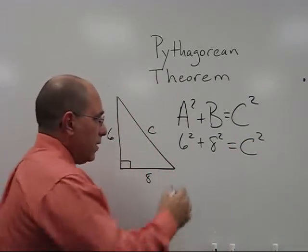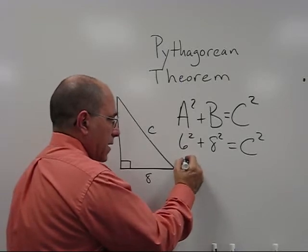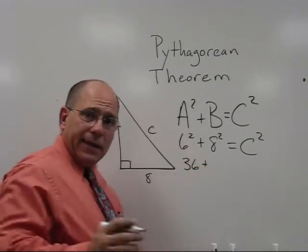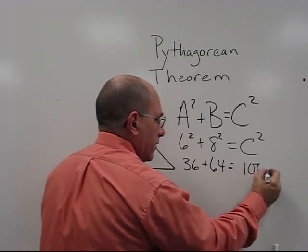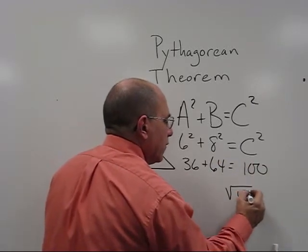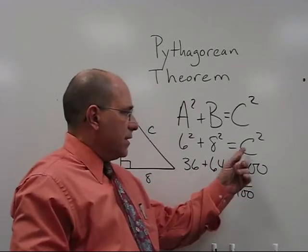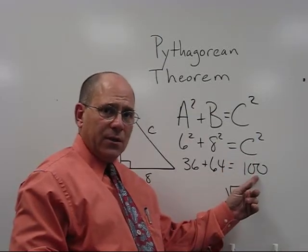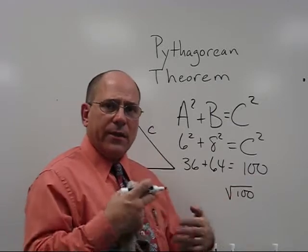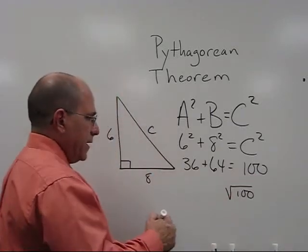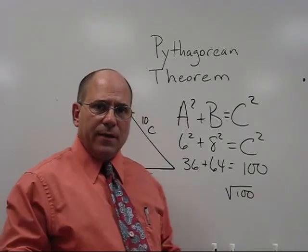Now to solve it, we say six times six is 36, eight times eight is 64, and that equals 100. Then we find the square root of 100. We have to find out what was squared to equal this. In this case, it comes out to 10. So we know that this side equals 10.